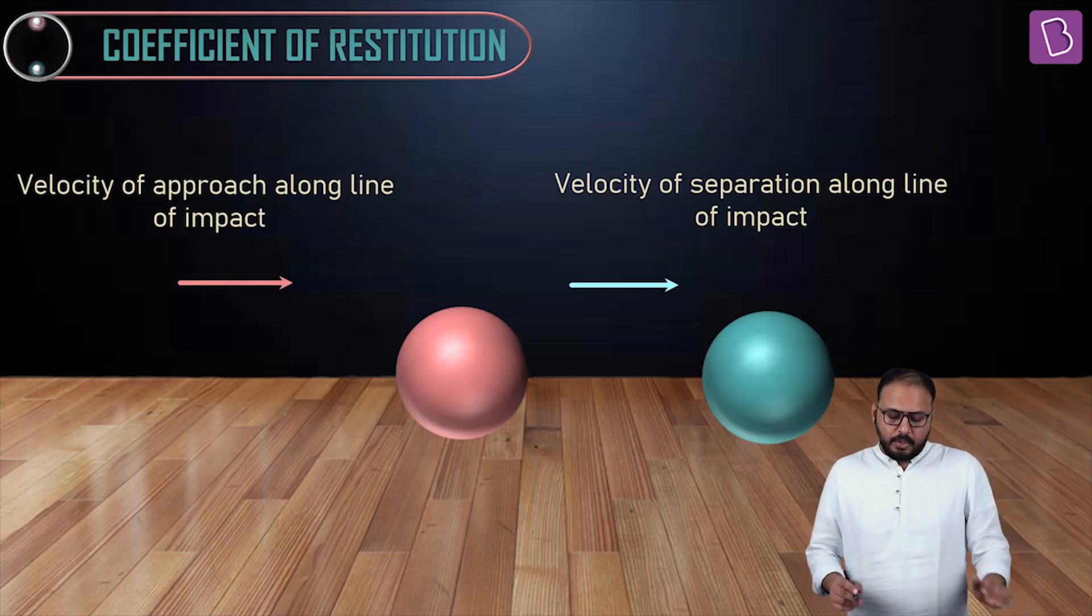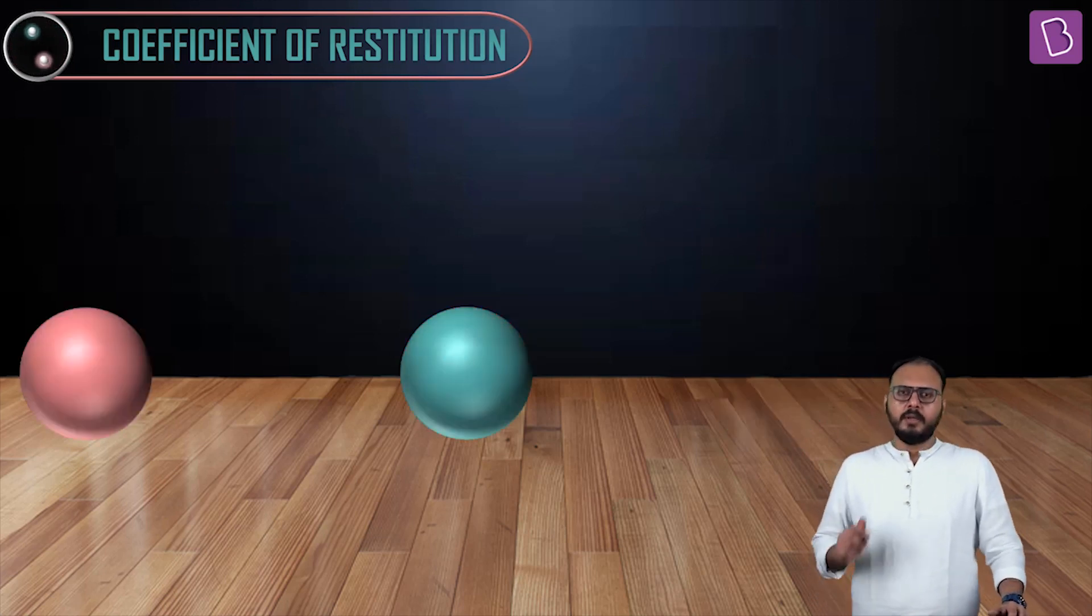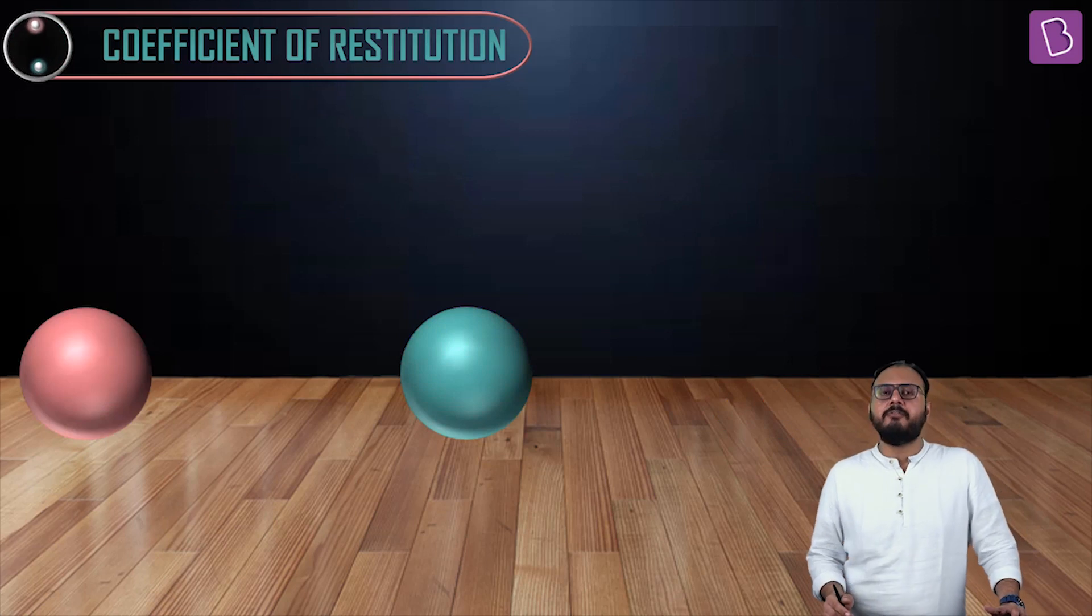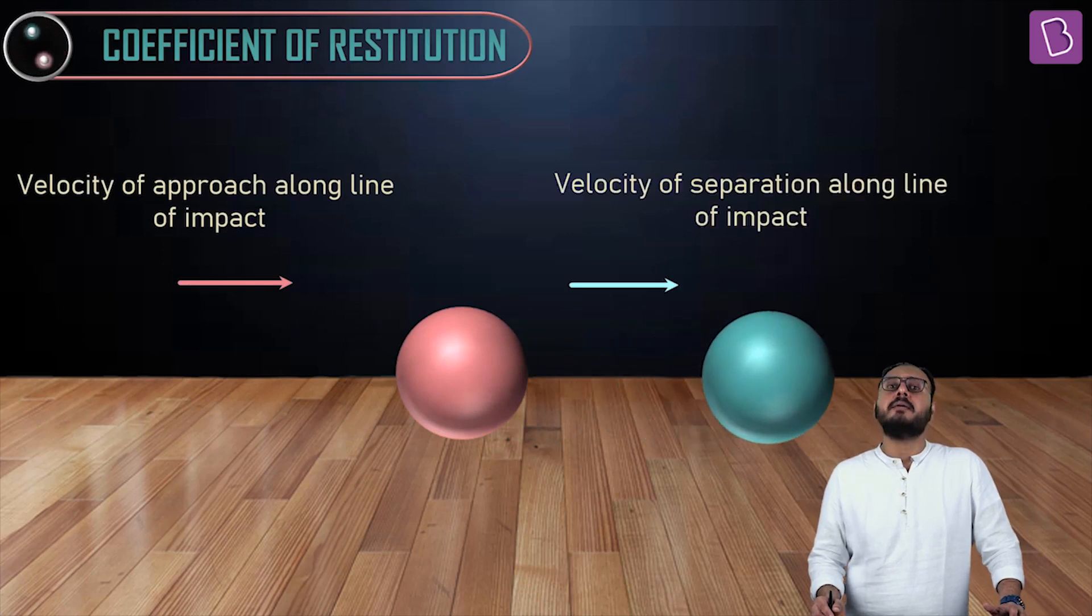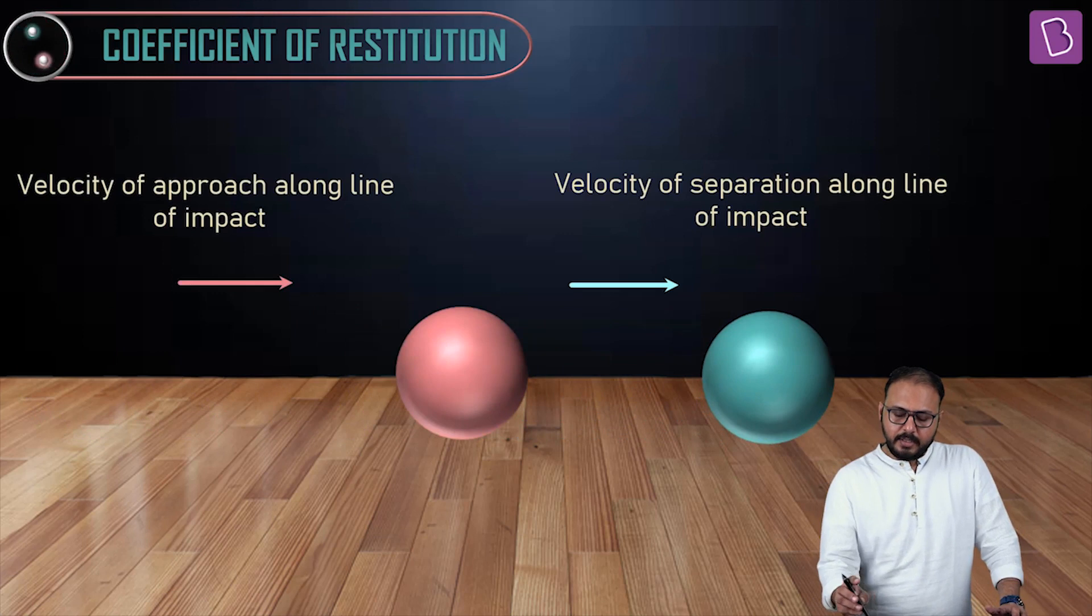What he proposed was, look at the velocity of approach before the impact. Let's consider the most simple case. What's the most simple case? Consider two particles involved in a head-on collision. They approach each other. And then they separate. Another word for separate? Recede away. So they approach and they recede.